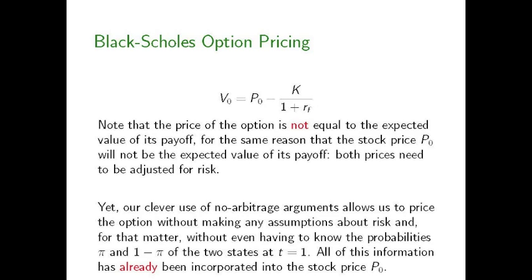Notice that the price of the option is not equal to the expected value of the payoff, for the same reason that the stock price is not the expected value of its payoff — both prices need to be adjusted for risk. Yet this clever no-arbitrage argument, developed by Merton in the second paper, allows us to price the option without making any assumptions about risk, risk aversion, or even probabilities. All of that information — risk, risk aversion, and probabilities — has already been incorporated into the stock price P0, and will thereby be reflected in the price of the option.